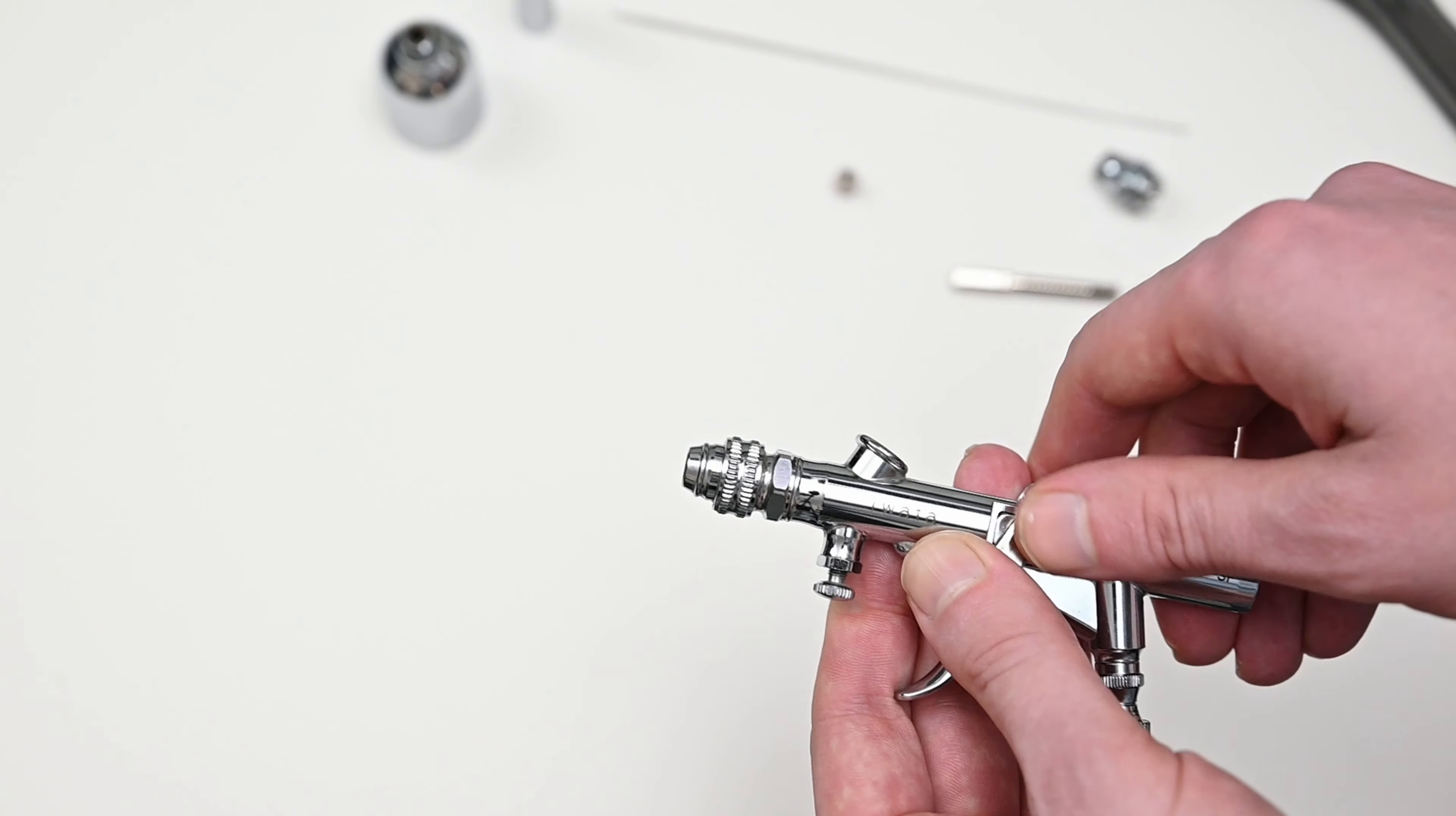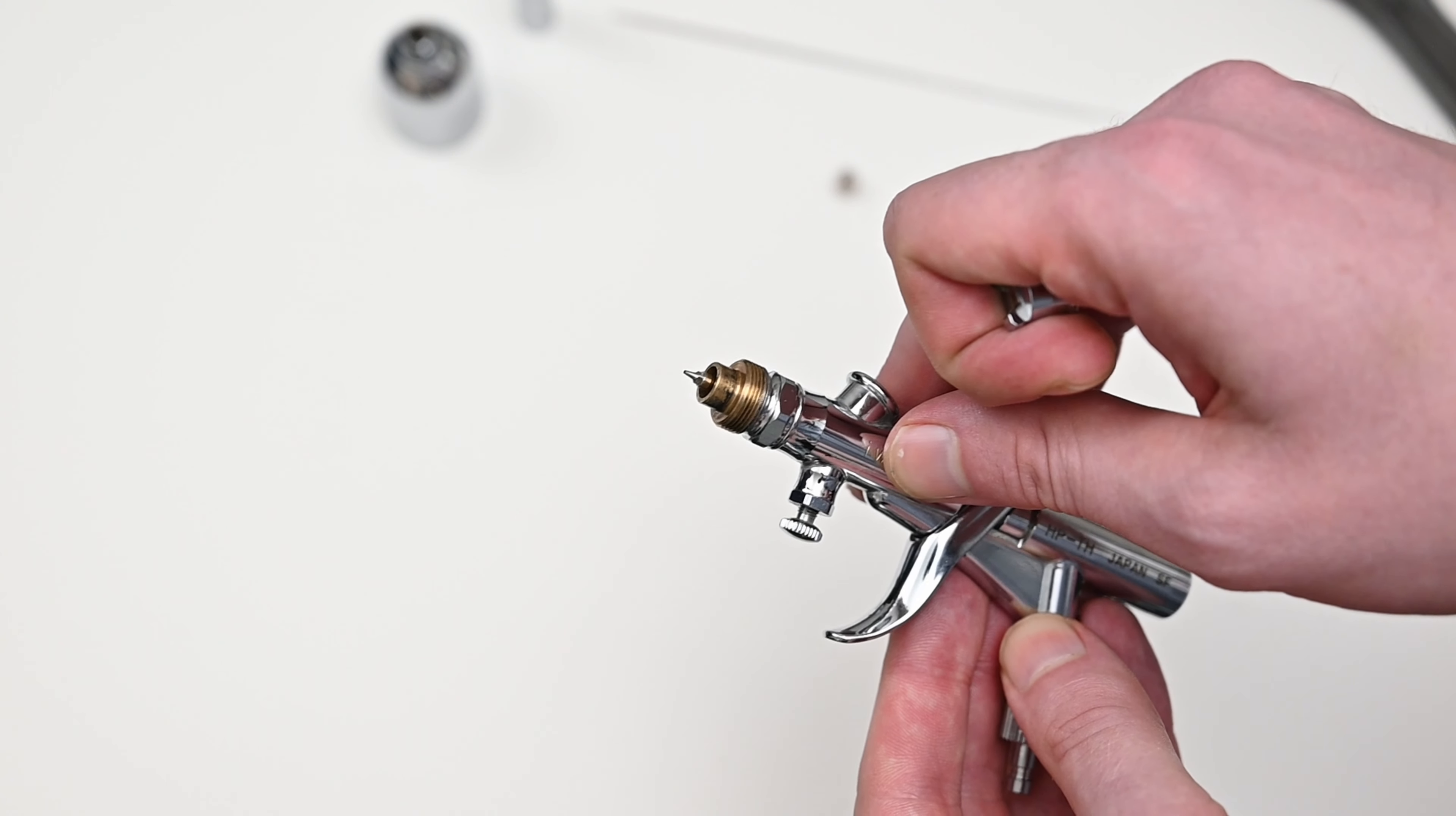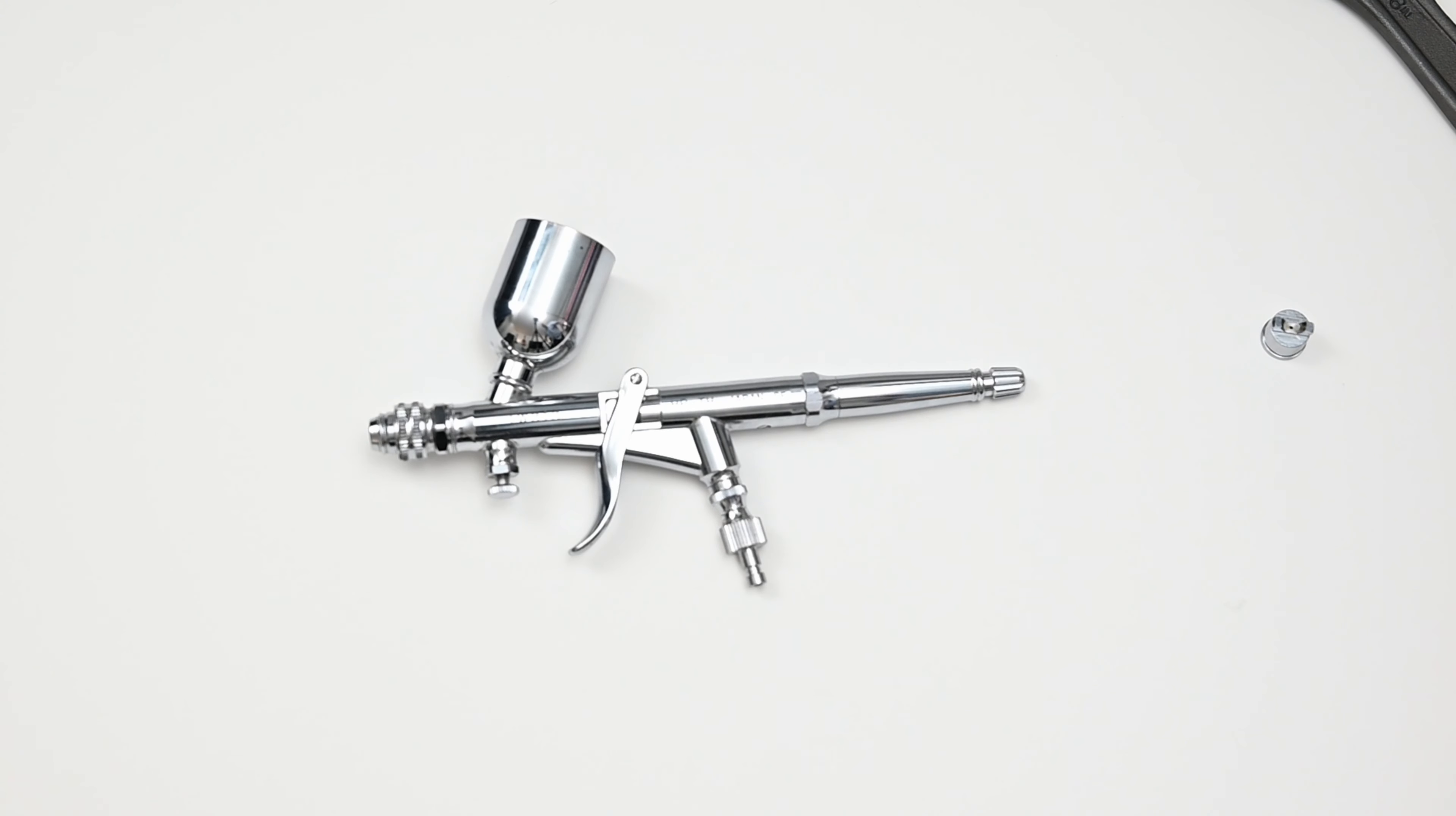This is pretty much as far as you'll ever need to disassemble this airbrush and clean it. I don't recommend removing the nozzle unless you absolutely have to. On this airbrush we have one of those traditional screw-in nozzles. You do receive a small wrench to remove this if you need to, but again I don't recommend it unless you absolutely have to, like it's broken and you need to replace it.